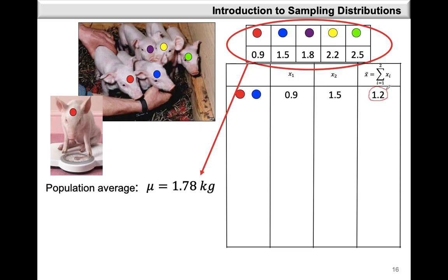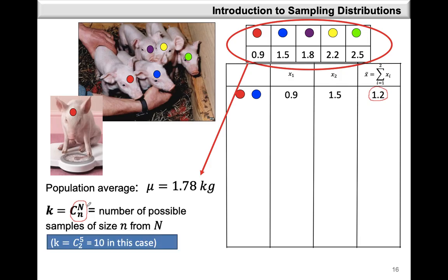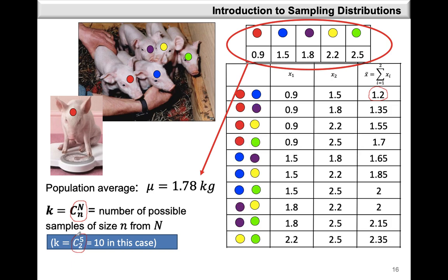We may be interested in knowing how many possible samples we can collect from this population of five. Using our combination rules, the number of possible samples k equals the population size N combination sample size n. For our example, k equals five combination two, which gives us 10 samples.